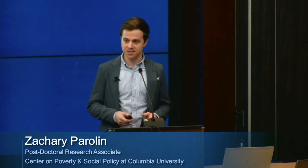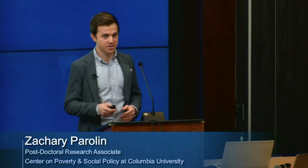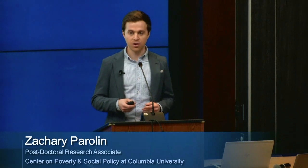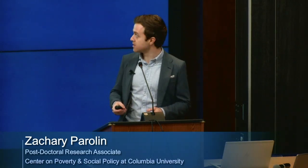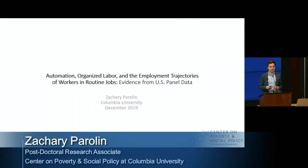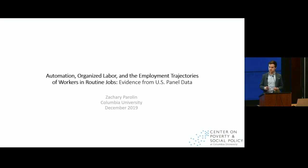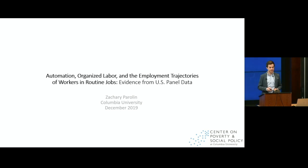My name is Zach Perlin. I'm at the Center on Poverty and Social Policy at Columbia University. The focus of my research and the presentation today is trying to understand the role of organized labor and worker power in general in shaping the employment and earnings trajectories of workers who are in routine occupations. I'll be showing some results using the PSID, which is panel data that follows individual workers in the US over time through about a three-decade period.